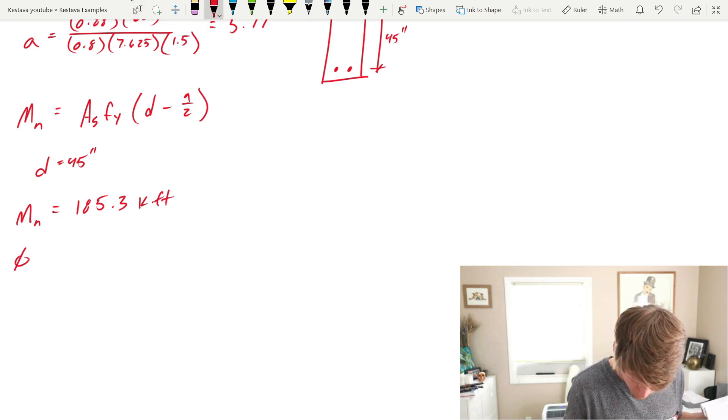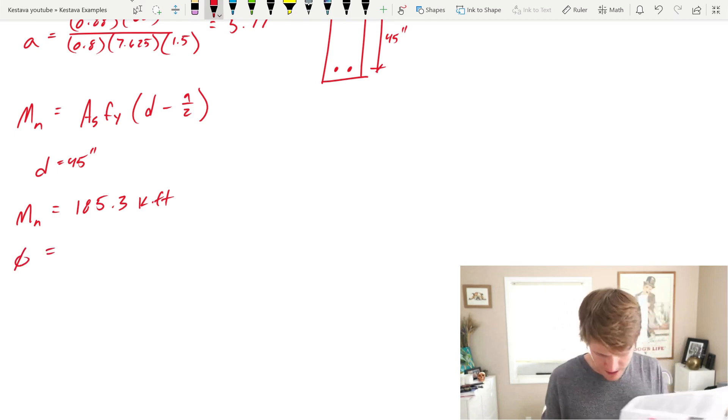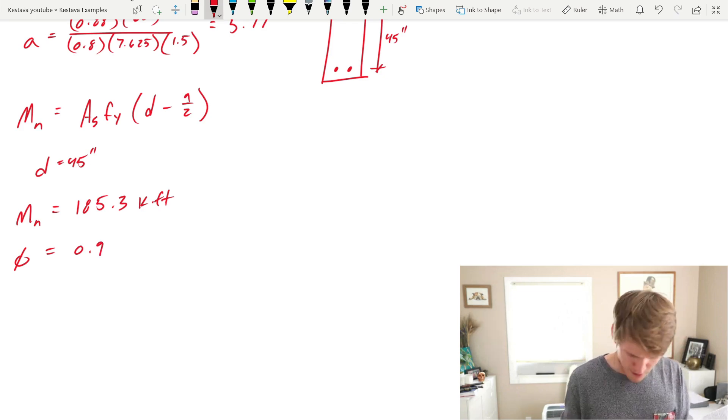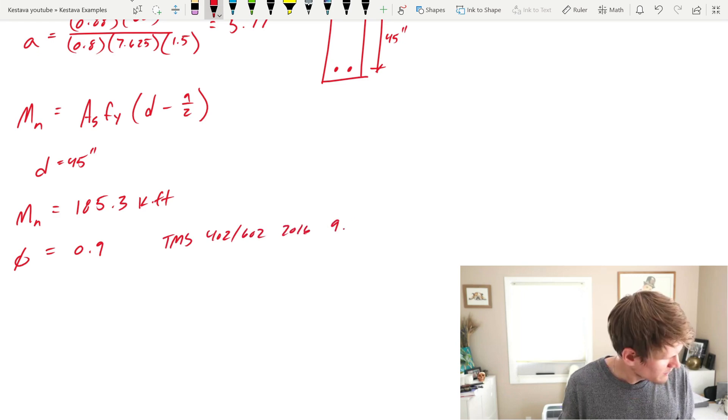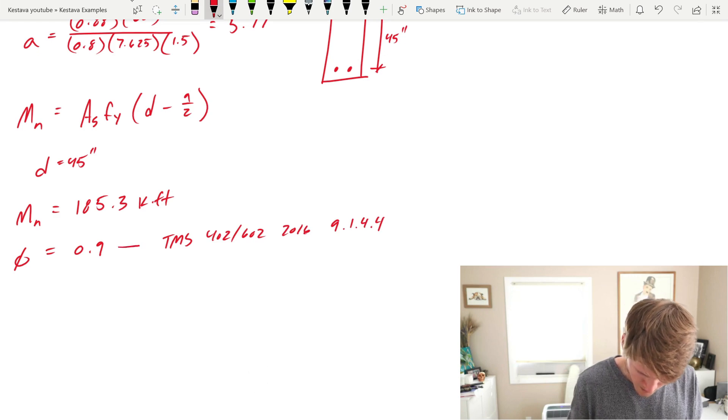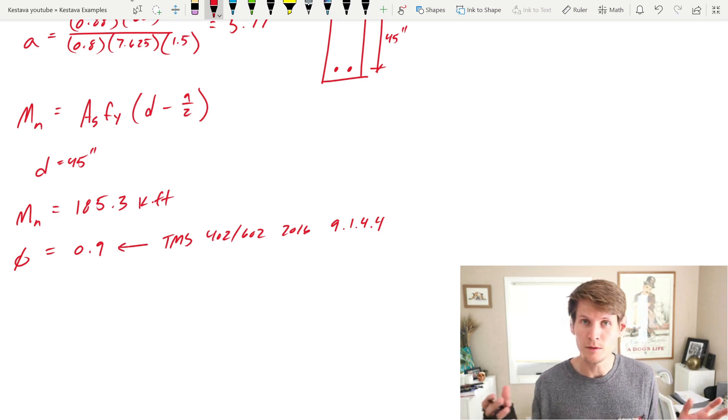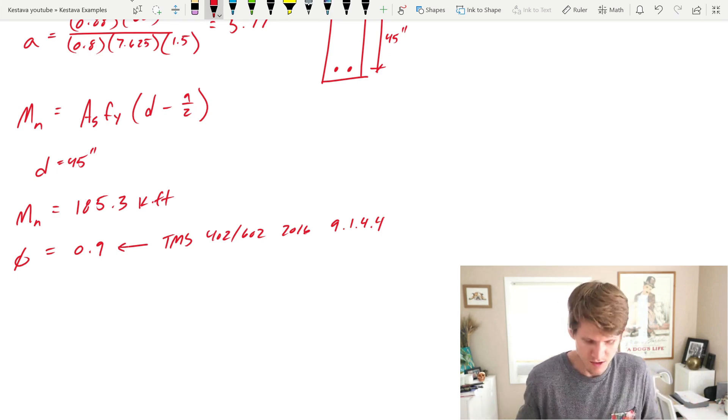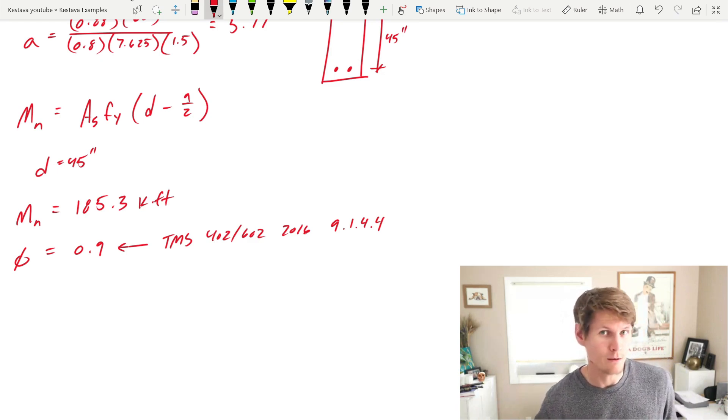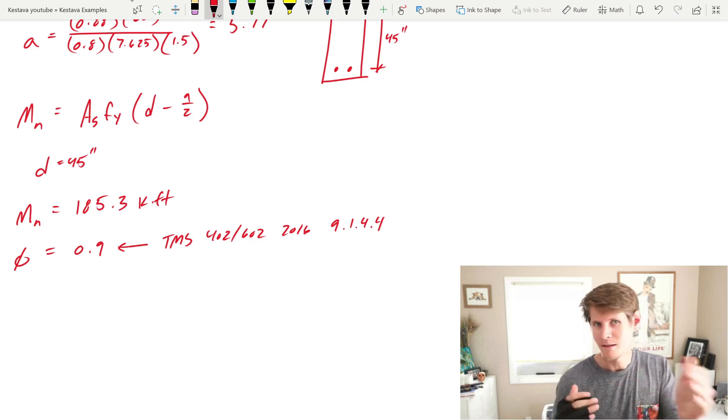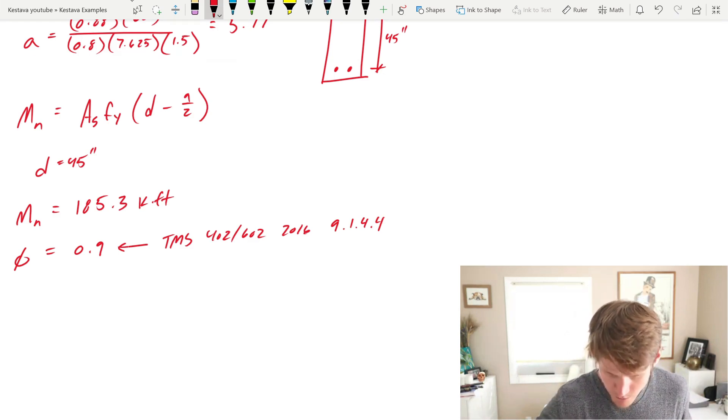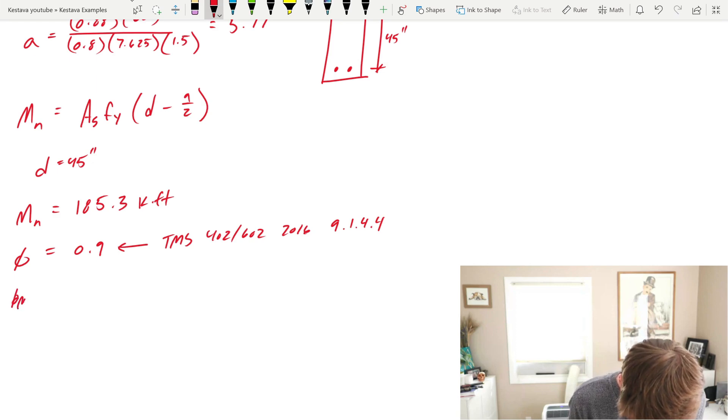And unfortunately, I don't have an electronic version of the TMS, but here it is right here. Next, you would need to find your phi for flexure and that's in TMS. Here, I'll write it down. Well, it's 0.9 for flexure. And that is TMS 402-602, 2016 edition, 9.1.4.4. That's where you get that sucker from. And chapter eight, I believe is the allowable stress design procedures. And then chapter nine is the strength design procedures. And you don't have any phi factors in allowable stress design, but you do in strength design. Again, that back and forth, that ping pong, but we've talked about it. So I'll get over myself and move on. You know what to do from here. Phi times MN equals those two combined, which gets you 166.7 kip-feet. Beautiful.